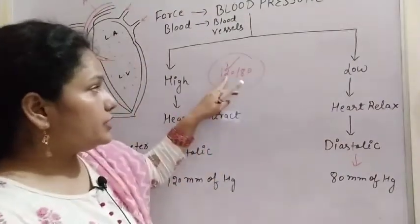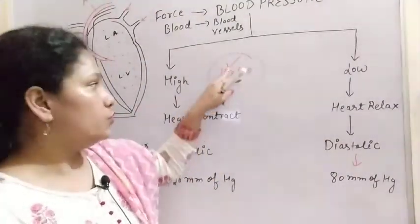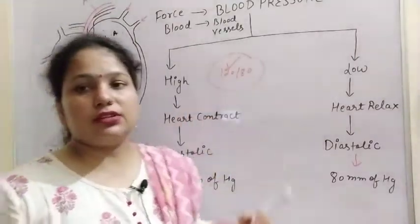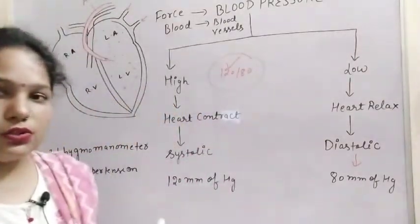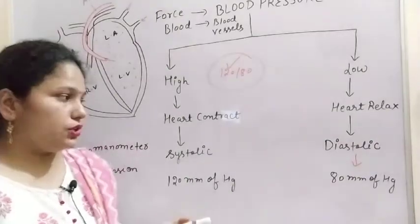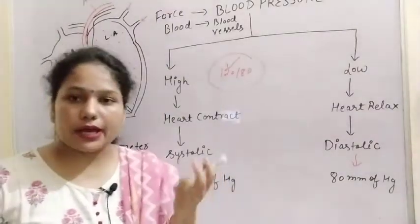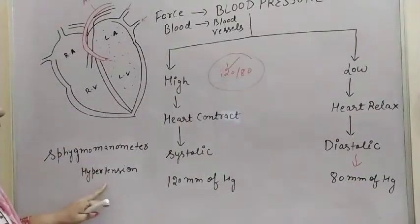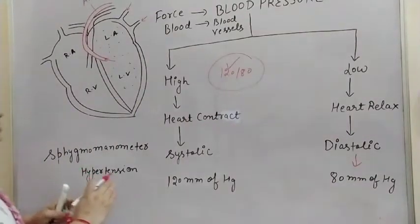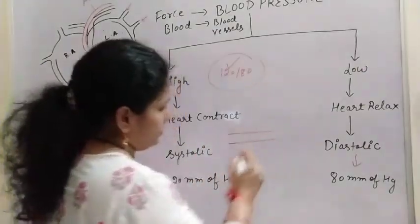But if this value varies — like it is rising above 120 — then the blood pressure is high. And due to the increase in high blood pressure, there may be the disease known as hypertension. So what is the name of the disease? Hypertension. What happens in this disease? There will be the blocking of the arteries.